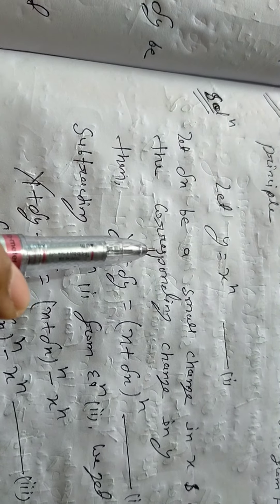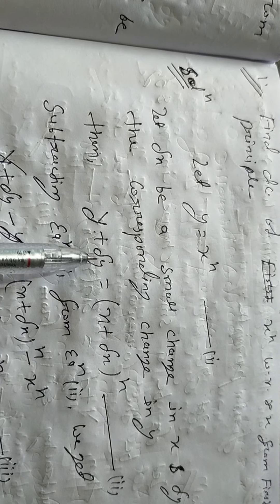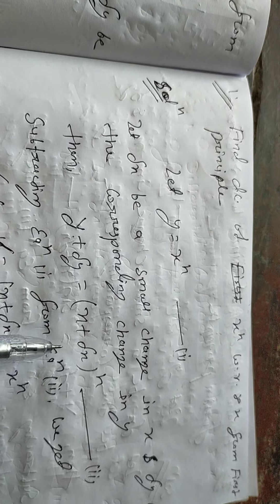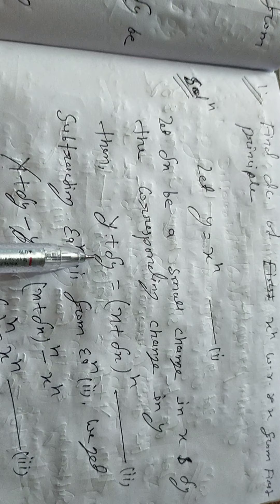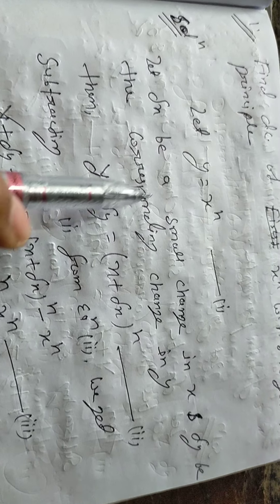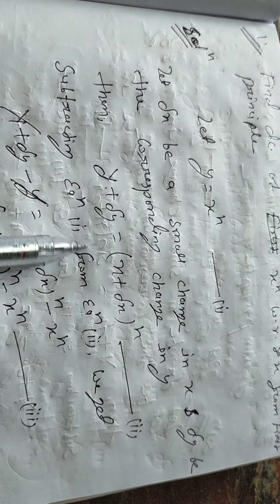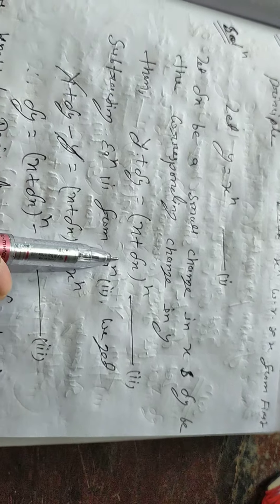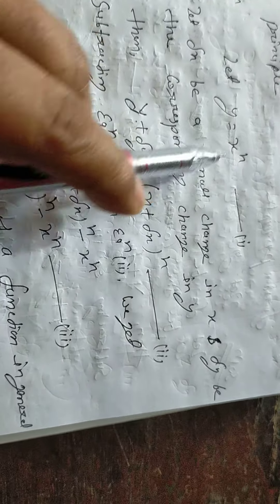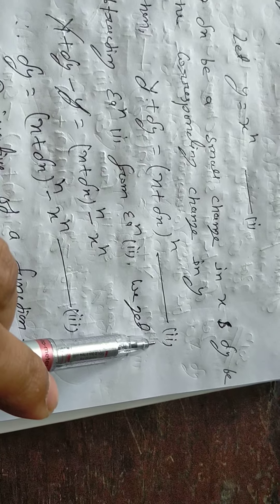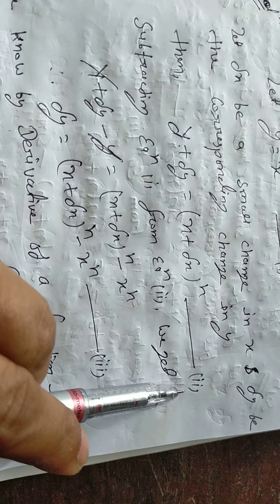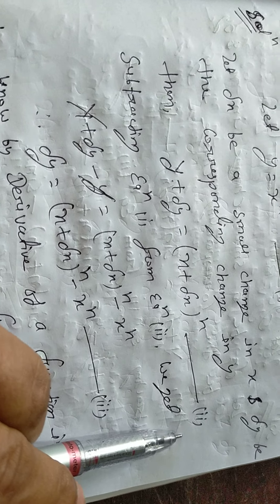Then what will happen? If we make a small change dy in y and dx in x, then y plus dy equals (x plus dx) to the whole power n. Where x was there, we replaced it with x plus dx. This is equation number 2. You remember from 11th class, I already explained this topic.